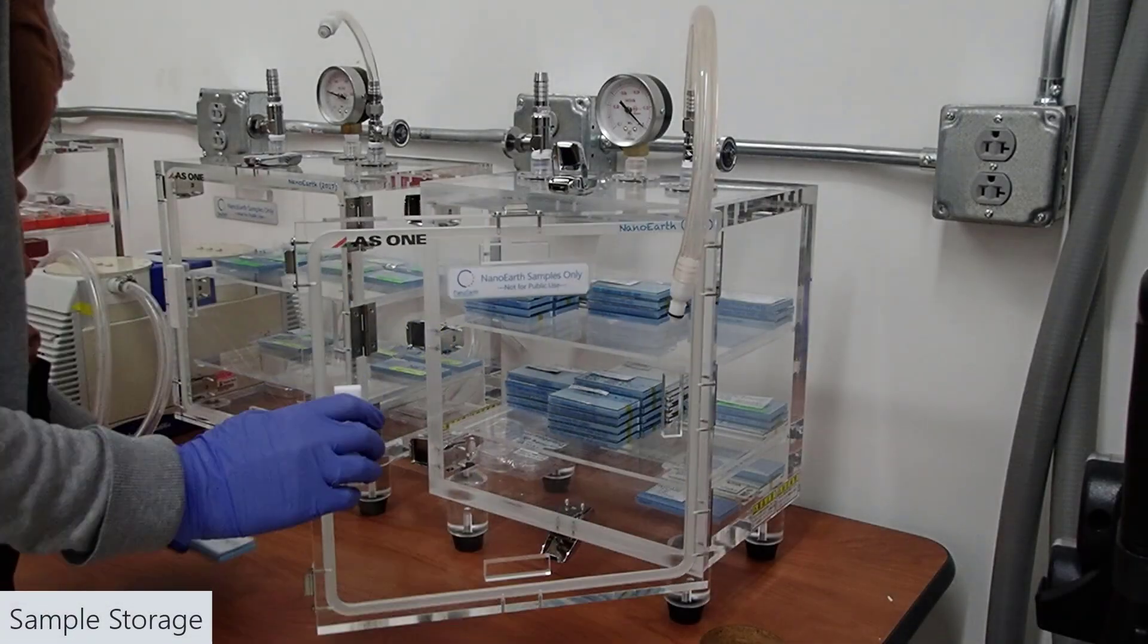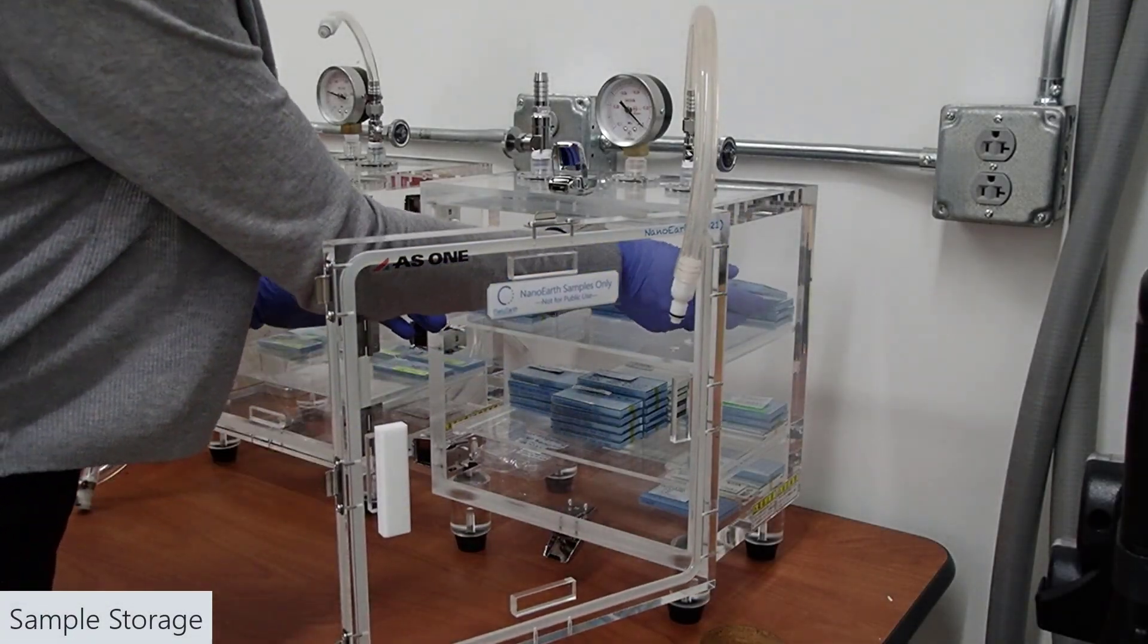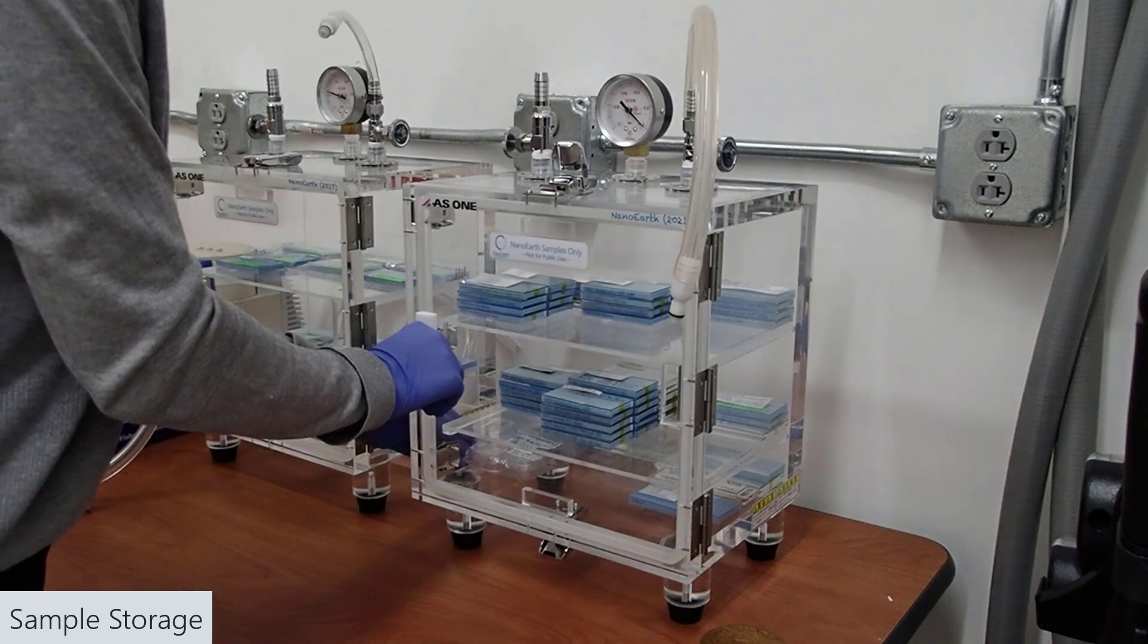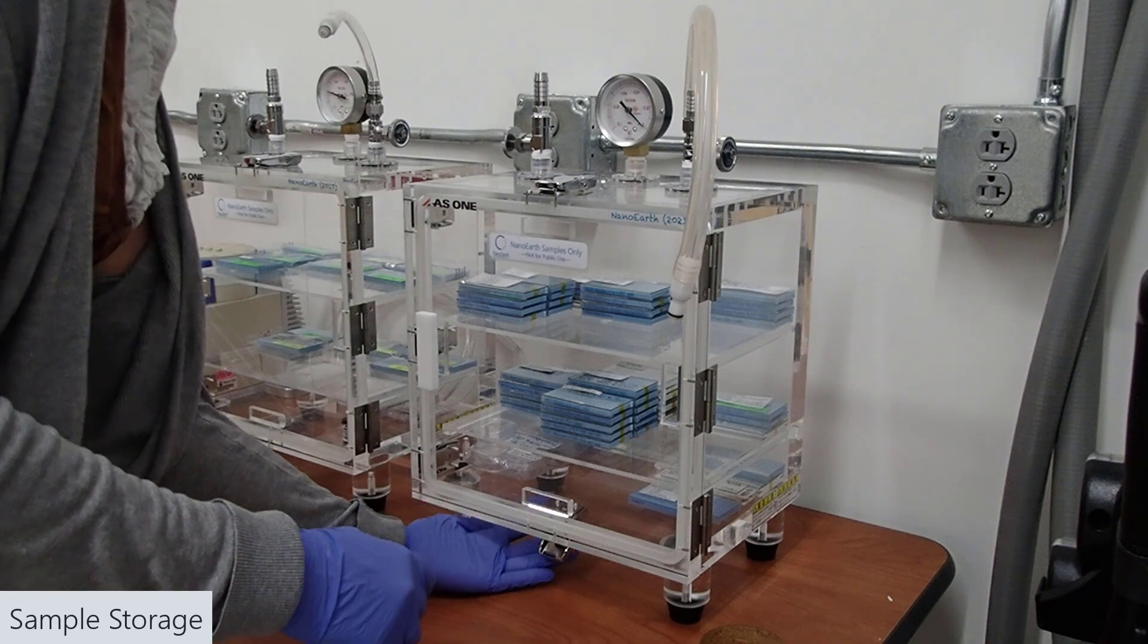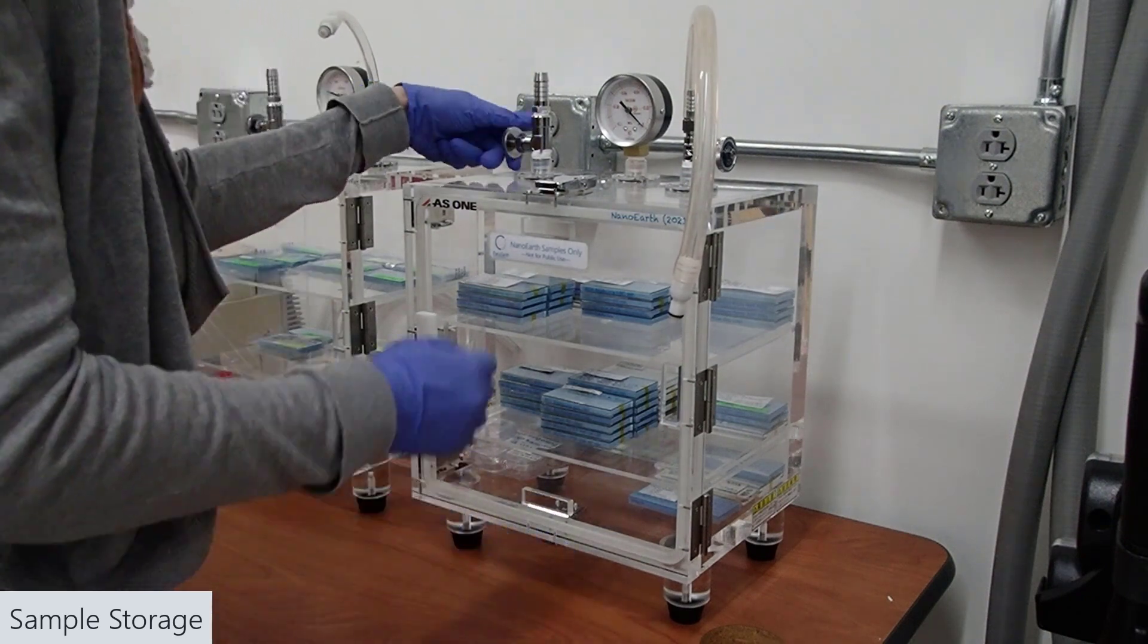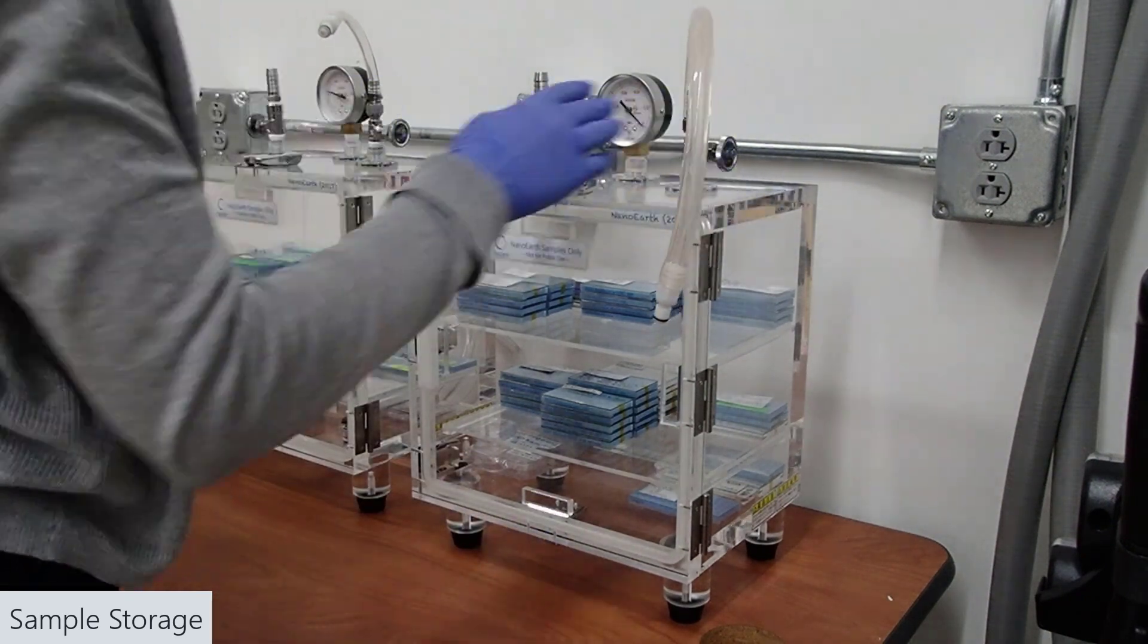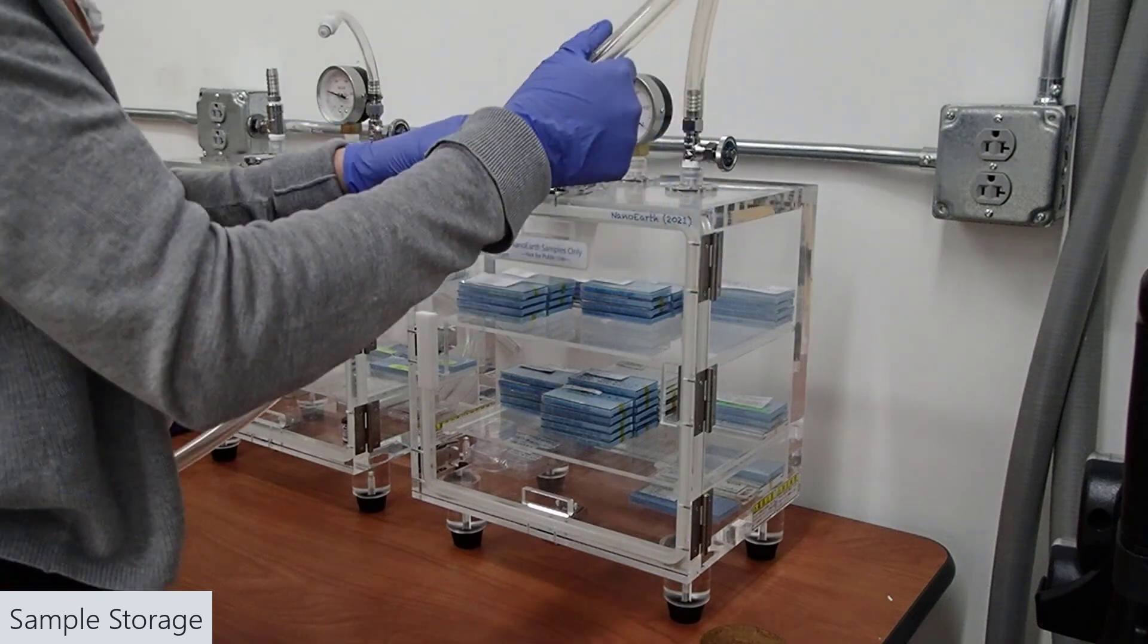And ideally, when you're not actively using your sample, you do want to store it in an inert environment. So, we have vacuum desiccators. You could also use a standard desiccator storage device that has nitrogen, for example. Whatever works best.